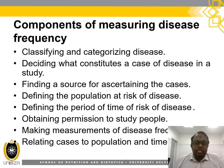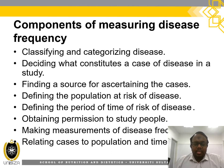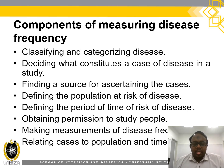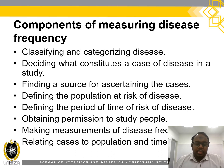These are the components of measuring disease frequency. First, classifying and categorizing the disease. Second, deciding what constitutes a case of disease in a study. Third, finding a source for ascertaining the cases. Fourth, defining the population at risk of disease. Fifth, defining the period of time at risk of disease. Sixth, obtaining permission to study people. Seventh, making measurement of disease frequency. And finally, relating cases to population and time at risk.